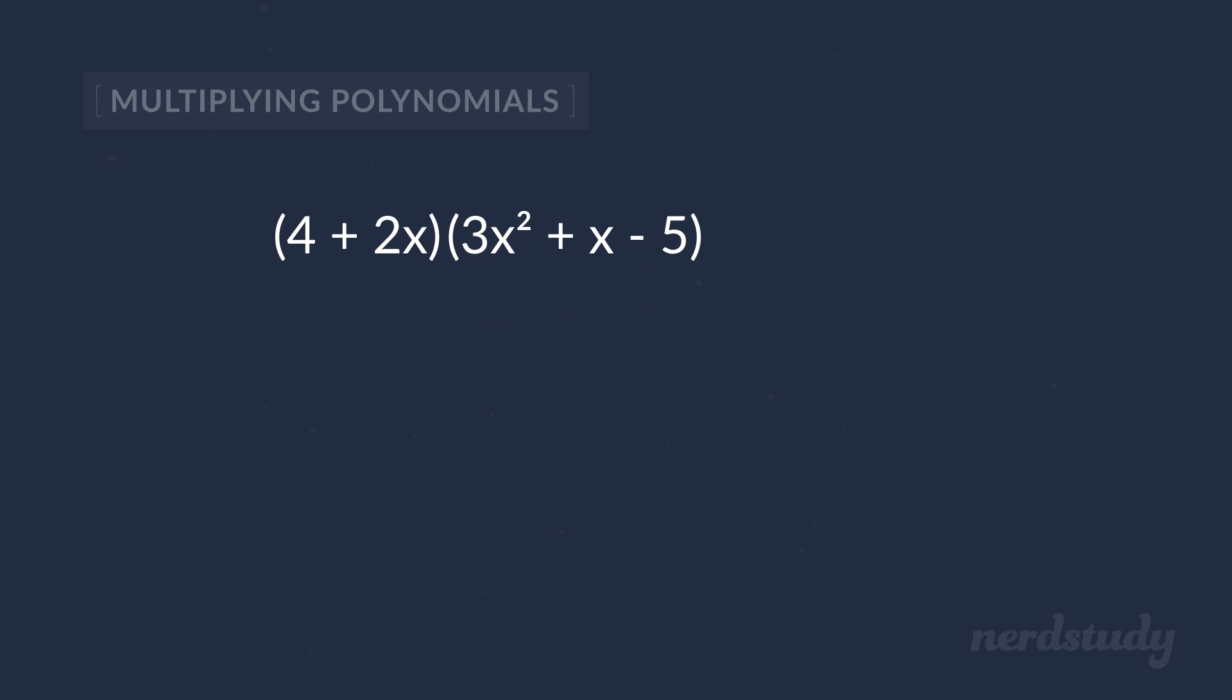So first we can take the 4 and multiply it to each term in this polynomial. We get 12x squared plus 4x minus 20. Then we get the 2x and multiply it to all of this as well. What we get is 6x cubed plus 2x squared minus 10x.